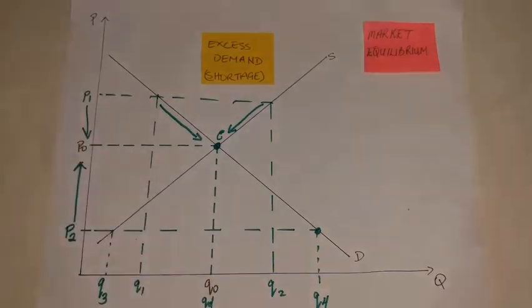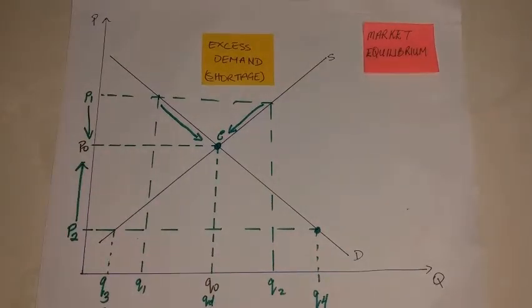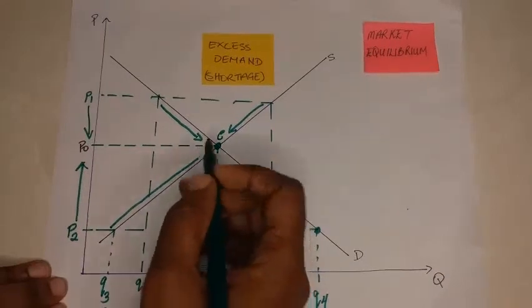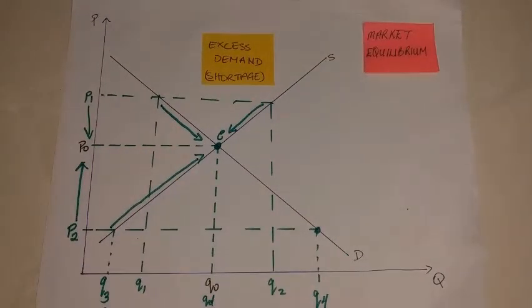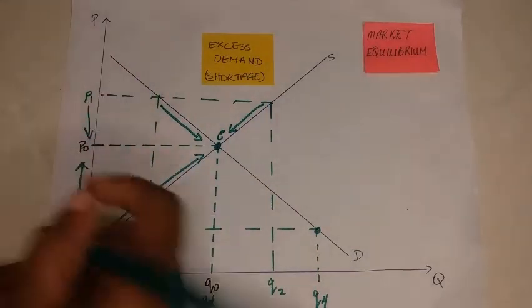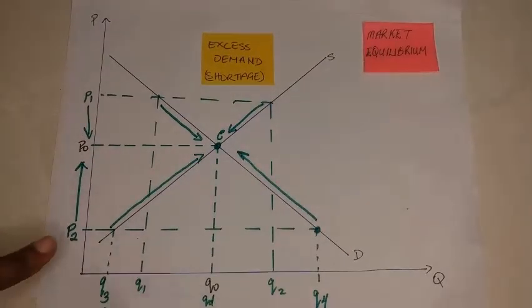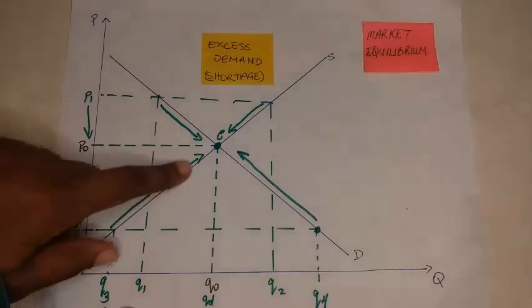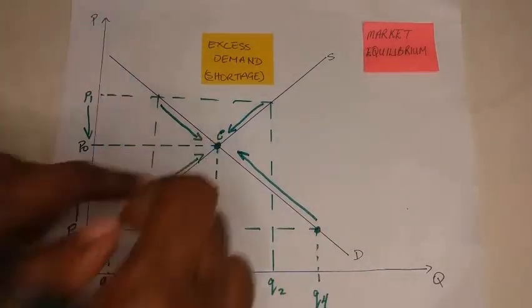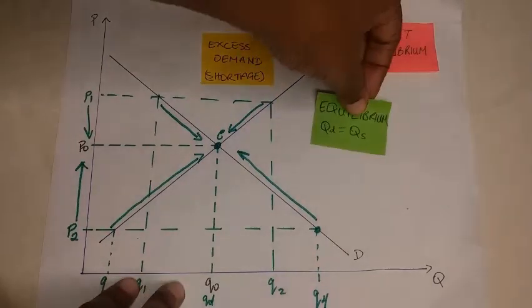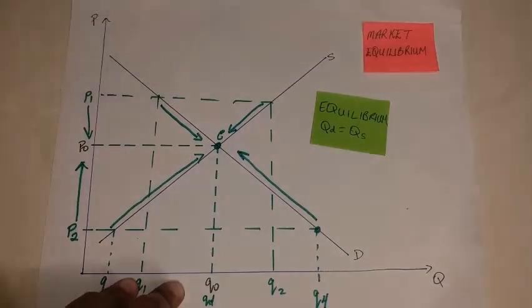So when we have a shortage occurring, price would increase to ration the goods and services available. When price increases, look at the movement along the supply curve — it would increase or expand. And when price increases, there's a contraction along the demand curve. So the supply curve is expanding, the demand curve is contracting, and it all heads towards the equilibrium point. In a free market system, prices always tend to come towards this equilibrium point where quantity demanded is equal to quantity supplied.